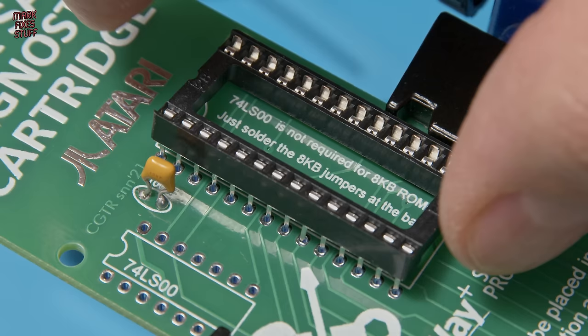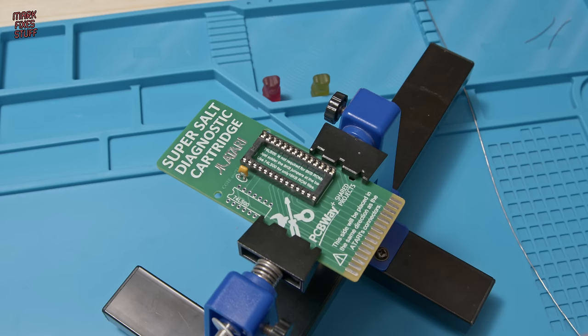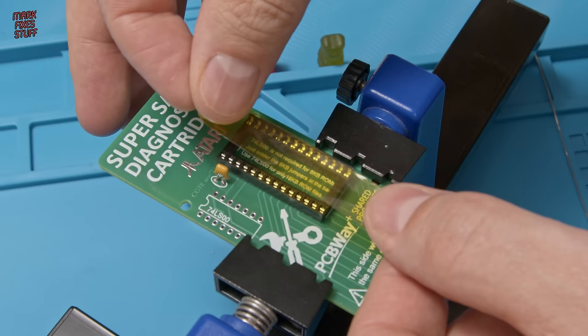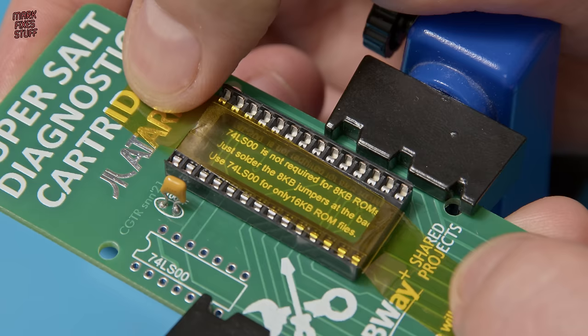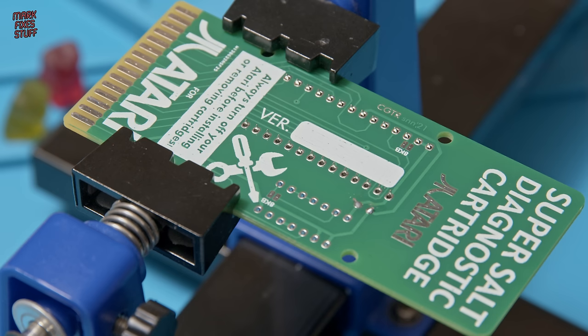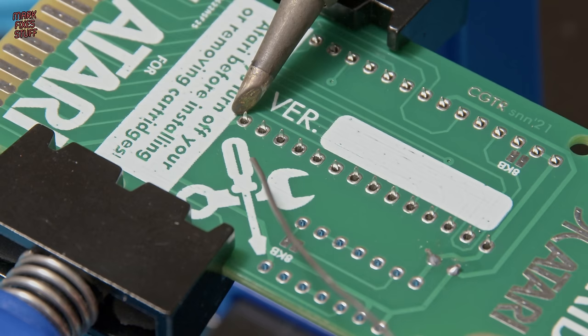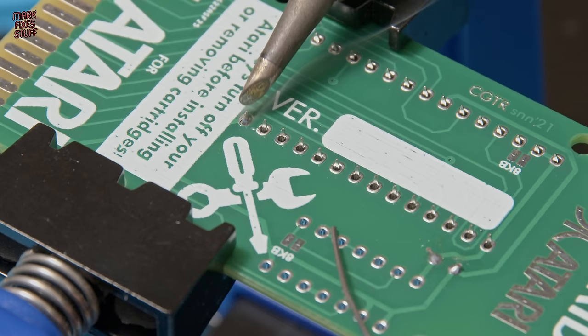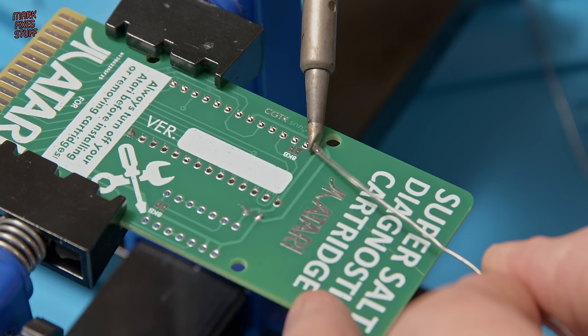Now that's in, we can pop the sockets on. We'll start with the big one. To hold it in place, we'll use some of this Kapton tape. It's a good alternative to Smurf poo when the Smurfs just aren't producing. The nice thing about Kapton tape is it's heat resistant and easy to remove. The best approach is to solder the four opposing pins first. This ensures your socket can't drop out whilst you're soldering.